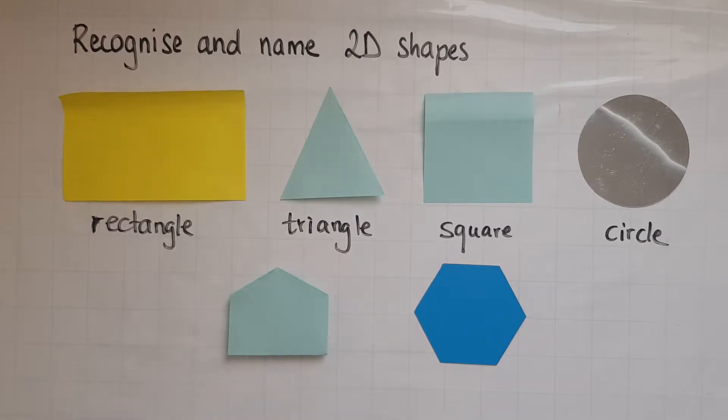The extra shapes you need to know at entry 2 level are these two. This—what does it look like? It looks like a house, doesn't it?